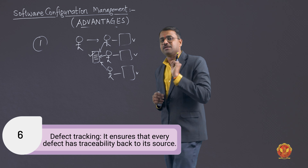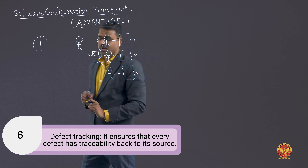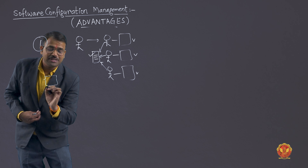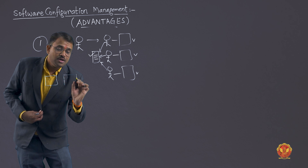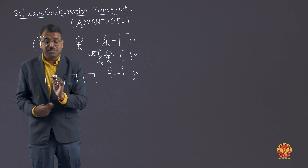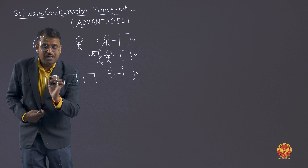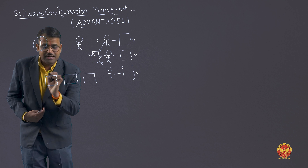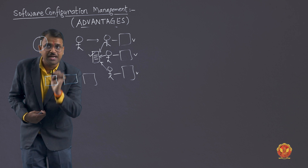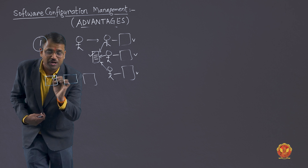Then comes 'defect tracking' — it ensures that every defect has traceability back to its source. There is a chain reaction, as we discussed when studying SDLC: if a defect is retained at the design stage and you fail to catch it, that defect will carry on forward and create a chain reaction.